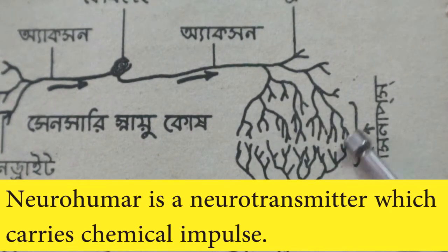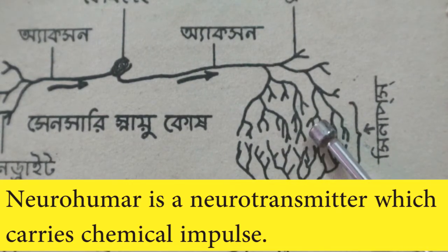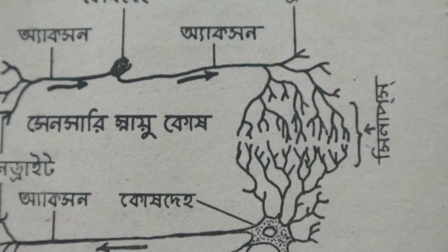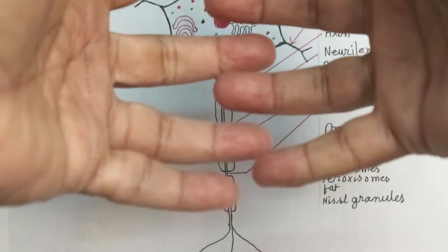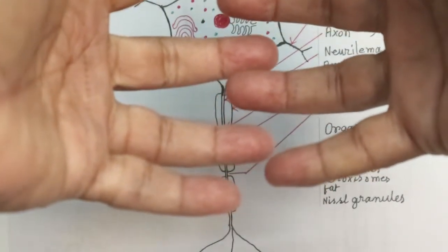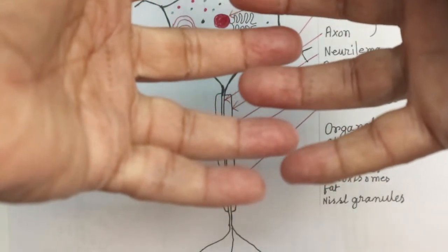The terminals of neurons are not in direct touch; there are microscopic gaps between them. The breadth of a neuron is between four to 100 microns, where one micron is one-thousandth of a millimeter. In length, a neuron can be up to 1,000 millimeters.